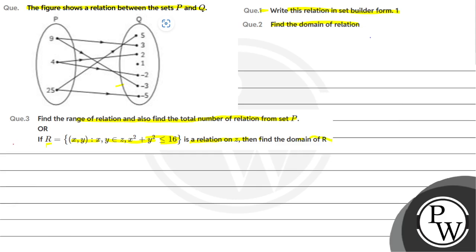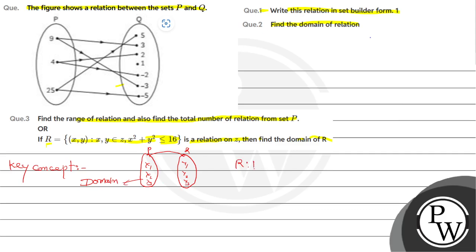Let's solve this question. The key concept for this question — let's look at it here. Key concept: if a relation is defined from P to Q, where we have elements x1, x2, x3 in P and y1, y2, y3 in Q, then this first set is what we call the domain. If R is defined from P to Q, then P is what we call the domain.